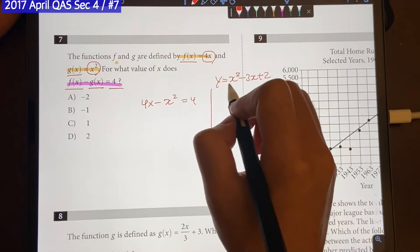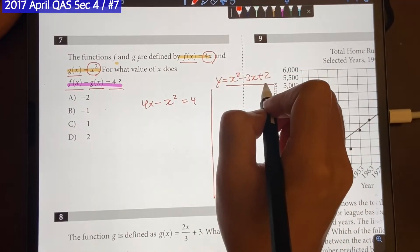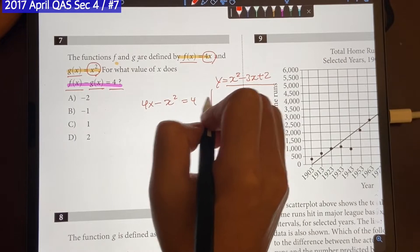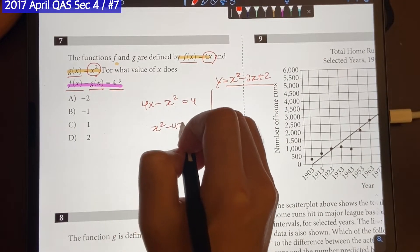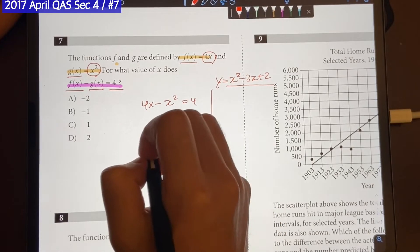Usually we have every single term grouped on the other side. So let's move these things around. We're going to add x squared, which will become x squared minus 4x plus 4 is equal to 0.